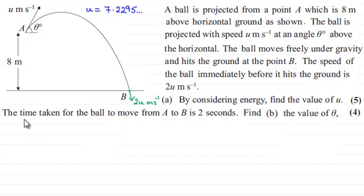Now for this part of the question, we're told that the time taken for the ball to move from A to B is 2 seconds. And we've got to find now the value of theta. And this is for four marks. So if you'd like to have a go at this, just give you a moment then to pause the video and when you come back you can check your solution against mine.